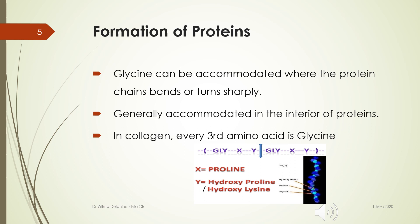Glycine is the commonest amino acid found in protein structure. Being small and nonpolar, it can be accommodated where protein chains bend and turn sharply, and is mostly present in the interior of the protein. Glycine is the smallest amino acid, hence it is found in every third position of the polypeptide chain of collagen, fitting into restricted spaces where the three chains of the helix come together. Glycine residues are part of a repeating sequence — glycine-X-Y — where X is frequently proline and Y could be hydroxyproline or hydroxylysine.